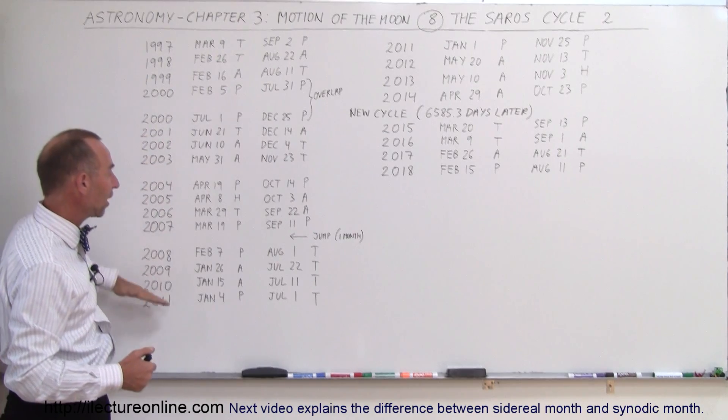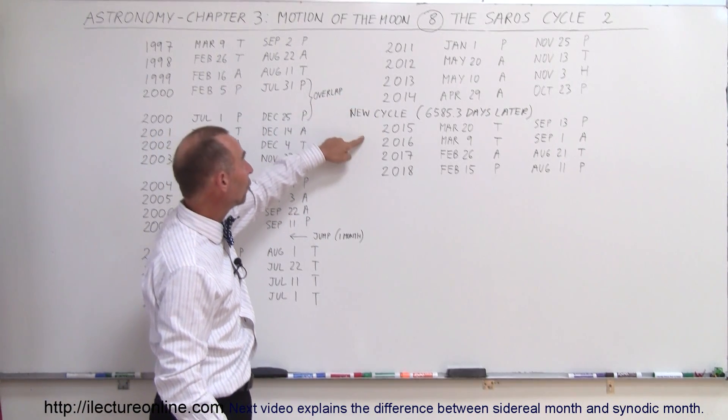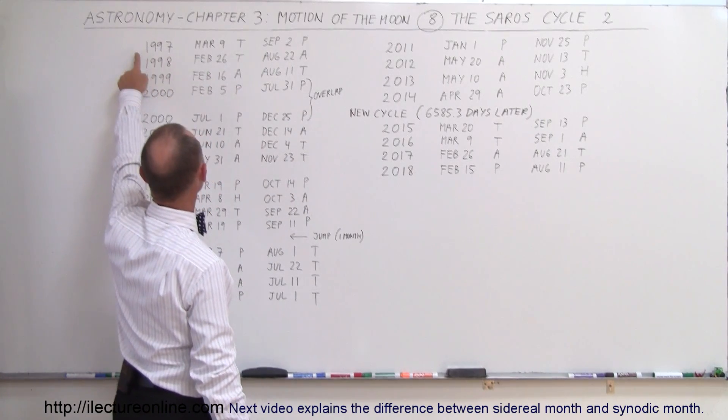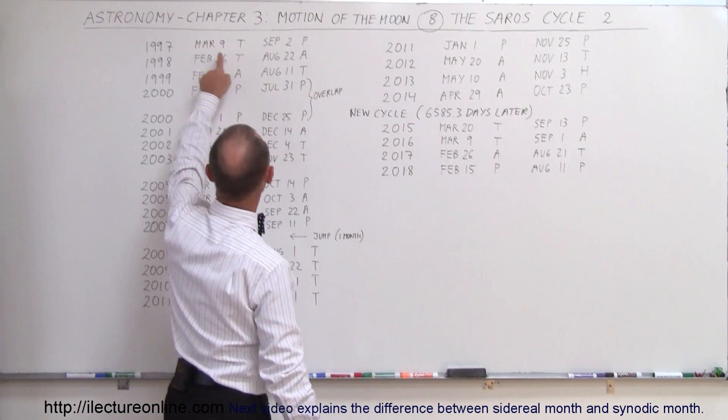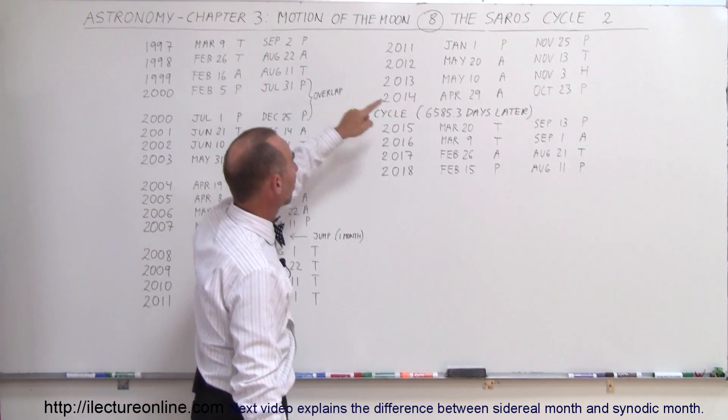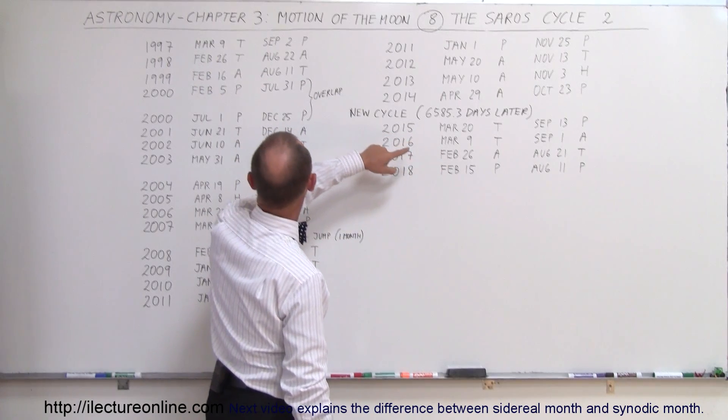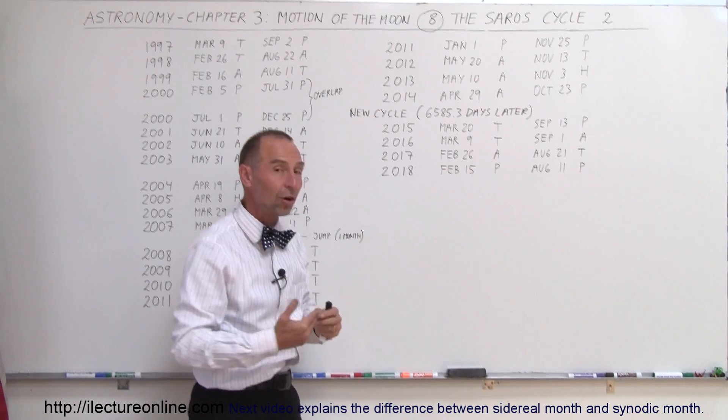But all in all, the whole cycle has about 40 eclipses, in this case 40 exactly. And then notice, in 2015, 18 years later after 1997, 10.3 days later, we have March the 9th, March the 20th, February 26th, March the 9th, and so forth. So 10.3 days later, we have the new cycle starting.